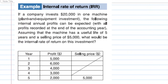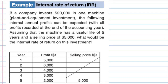For this recording, I'm going to show you how to compute the internal rate of return, IRR. If a company invests $20,000 in one machine, and the following internal annual profits can be expected with all profits recorded at the end of the accounting year. Assume that the machine has a useful life of five years and a selling price of $5,000. What would be the internal rate of return on this investment?